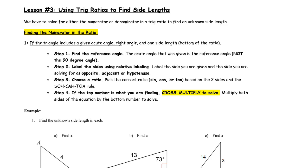In this lesson we're going to be using trig ratios to find side lengths. Compared to a previous lesson where we used trig ratios to find angles, this is a little more straightforward because you just use the sine, cosine, or tan buttons on your calculator — no second button needed. There are two types of questions: one where we're looking for a value in the numerator, and one where we're looking for a value in the denominator.